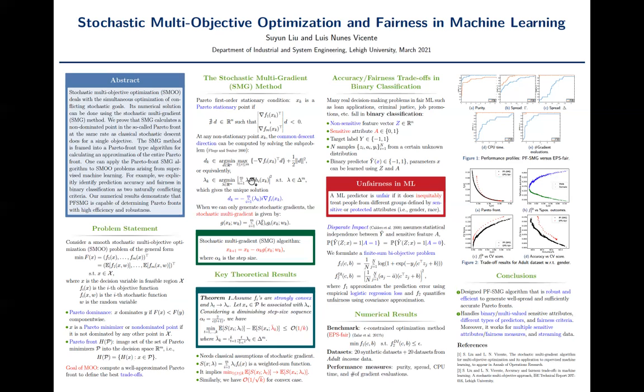And this subproblem is meaning that we want to find the coefficient of the minimum norm vector in a convex hull composed by the two gradients. Therefore, we can write down the explicit form of the common descent direction D-K as a convex combination of the two gradients.